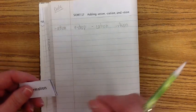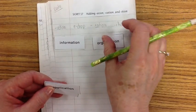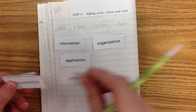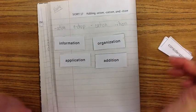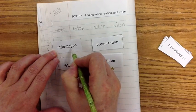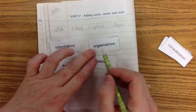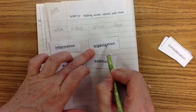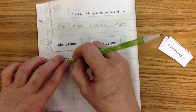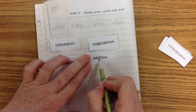Let's look at a couple of words. We have information, organization, application, and addition. Let's look at the base words. We have inform, organize, apply, and add.